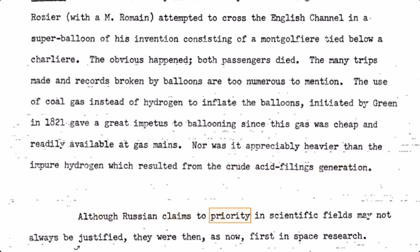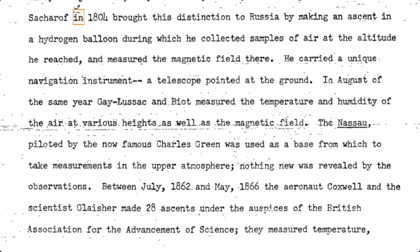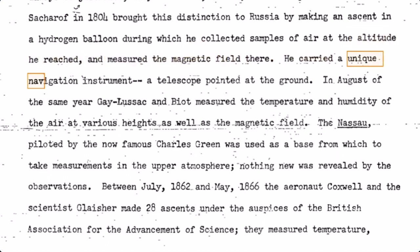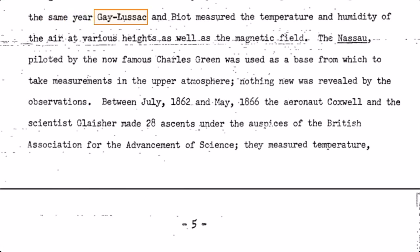Although Russian claims to priority in scientific fields may not always be justified, they were then, as now, first in space research. Sackhoff in 1804 brought this distinction to Russia by making an ascent in a hydrogen balloon during which he collected samples of air at the altitude he reached and measured the magnetic field there. He carried a unique navigation instrument — a telescope pointed at the ground. The same year Gay-Lussac and Biot measured the temperature and humidity of the air at various heights as well as the magnetic field. The Nassau balloon, piloted by the now famous Charles Green, was used as a base from which to take measurements in the upper atmosphere, though nothing new was revealed by the observations.